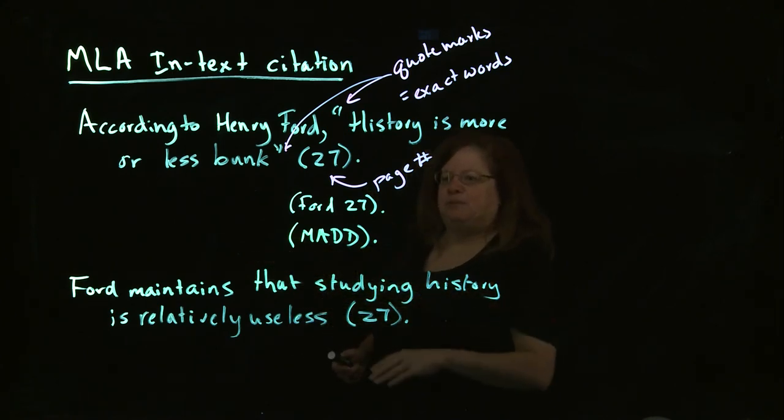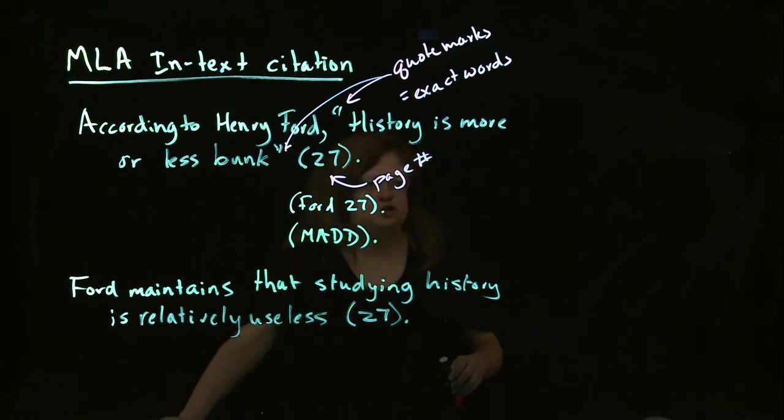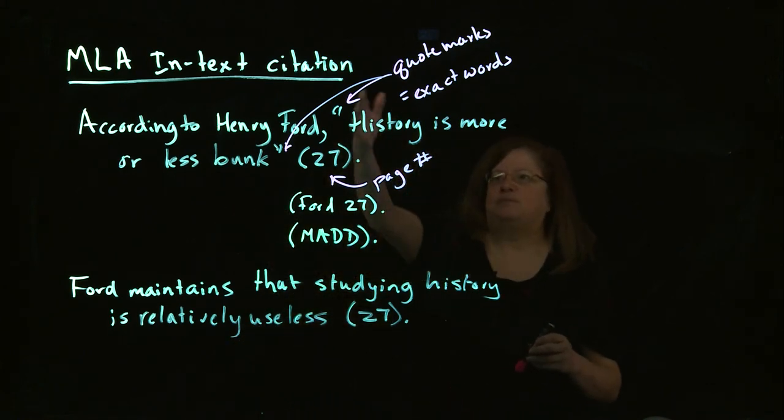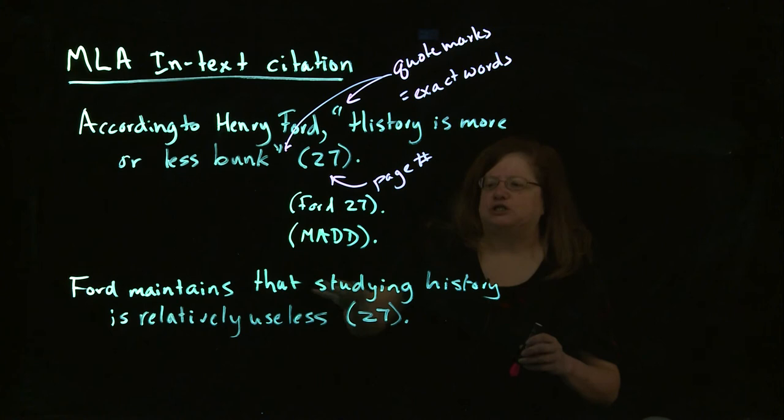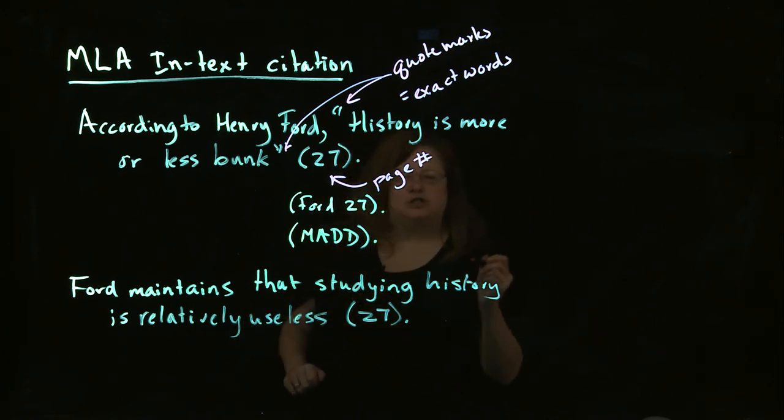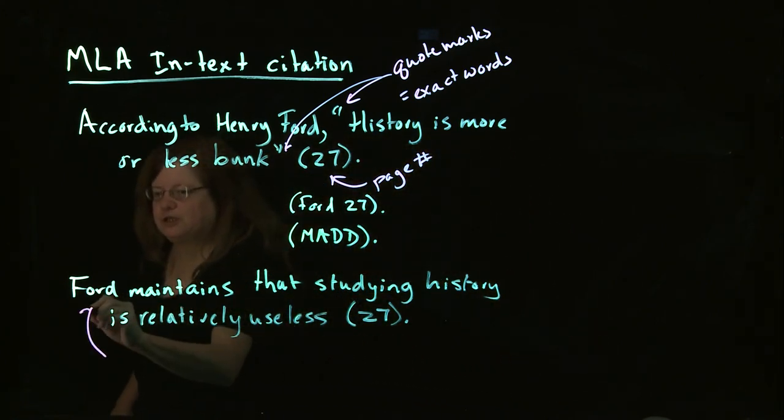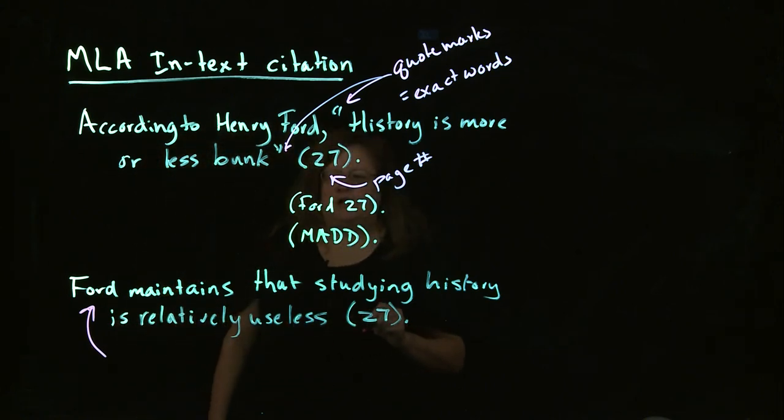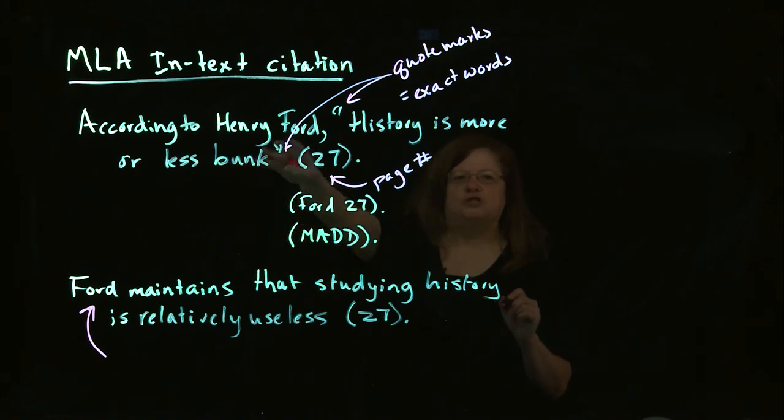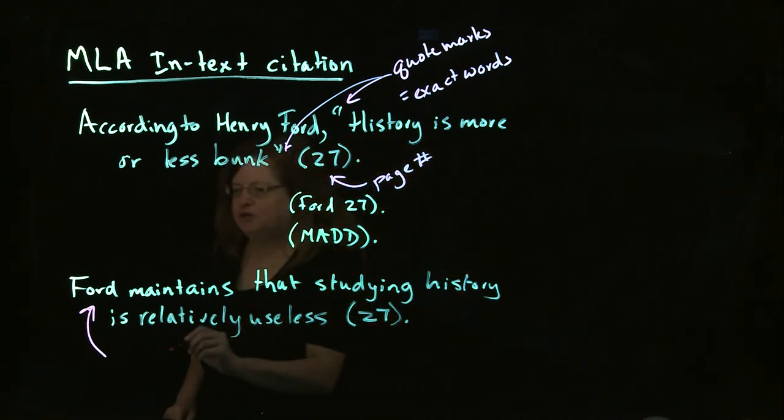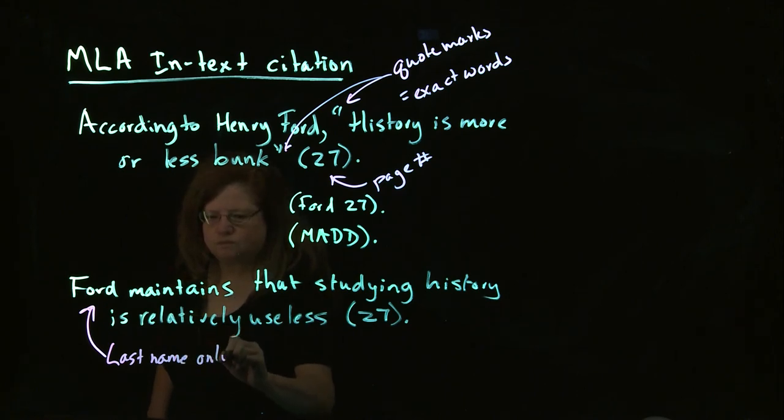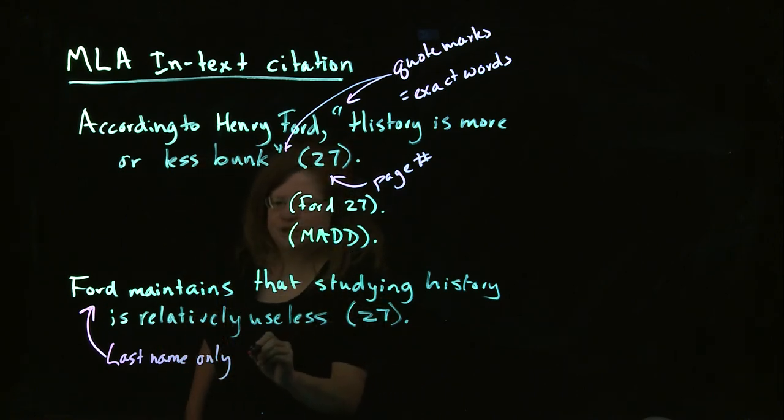So we're still naming him. Now you'll notice a couple of things going on here. Of course I already mentioned no quote marks because it's not the exact words. You'll also notice something else here, I've used just the last name. That's because when you've quoted somebody once, you quote the person using the full name the first time. Once you've quoted that person another time, you only need the last name on a second or later reference.